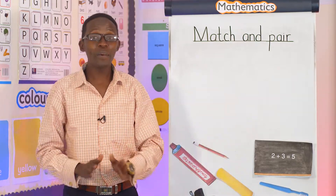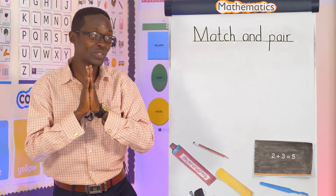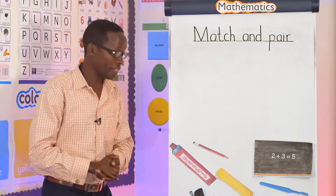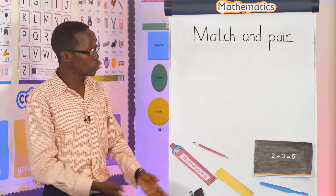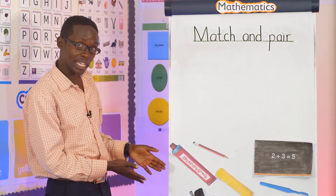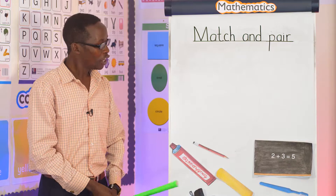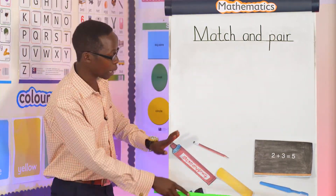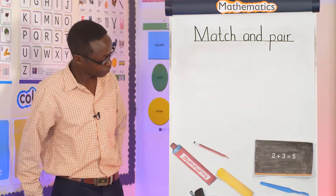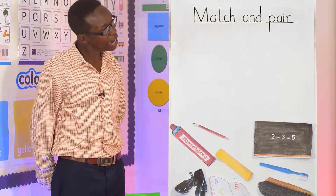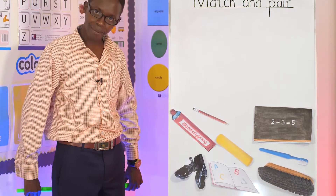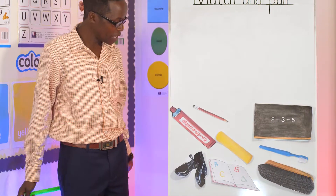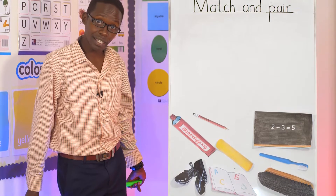Today I want you to look on my board and tell me what you can see. Look here — what can you see on my board? I have several items. I want you to tell me what you can see.